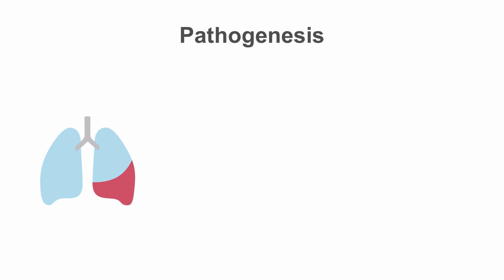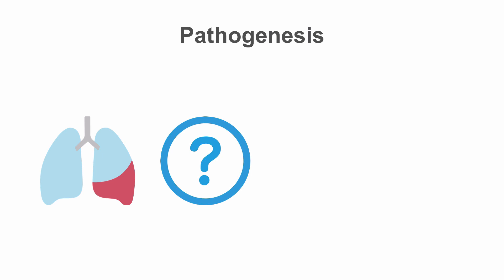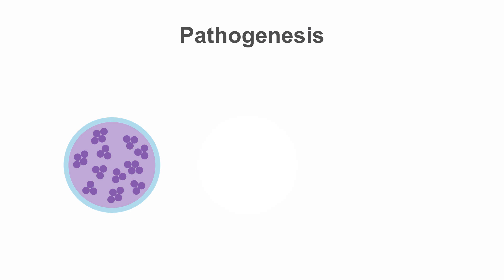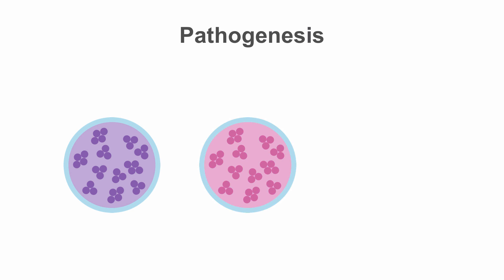Sepsis originates from pulmonary infections in about half of the cases, with 20 percent of patients having bacteremia from an unspecified source. Most of the rest come from the genitourinary tract or gastrointestinal tract. It can be caused by either gram-positive or gram-negative bacterial infections, although the latter are slightly more common.